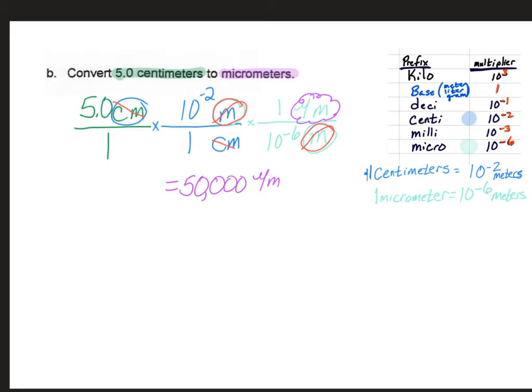And in correct scientific notation, we would move the decimal back 1, 2, 3, 4 places and end up with 5 times 10 to the 4th micrometers.